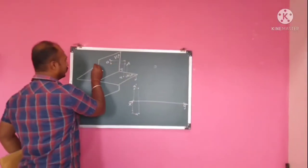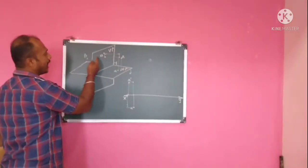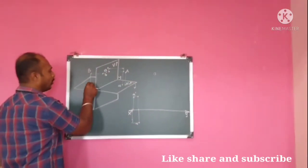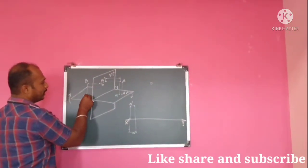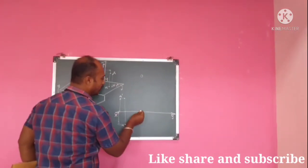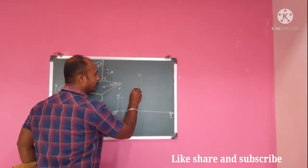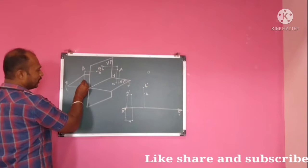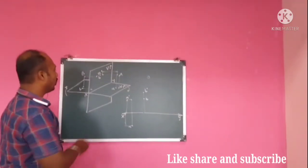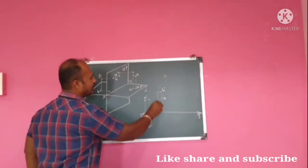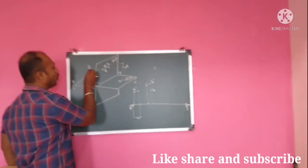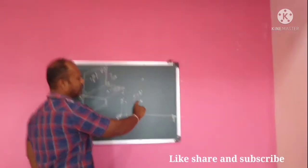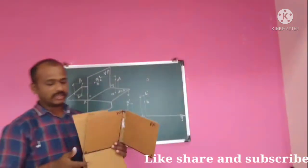So for a point b in the second quadrant — behind VP and above HP — its front view will be on the VP and the top view will be on the HP. When we rotate, the front view and top view get overlapped above the XY line. Here b-dash is the front view and b is the top view. The distance of b from HP is marked in the front view, and the distance of b from VP (behind VP) is marked in the top view.